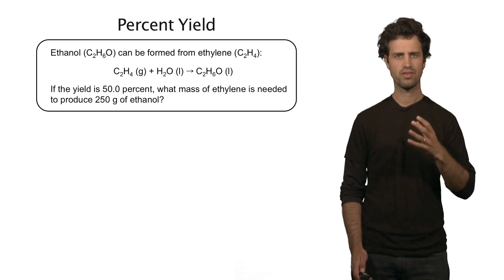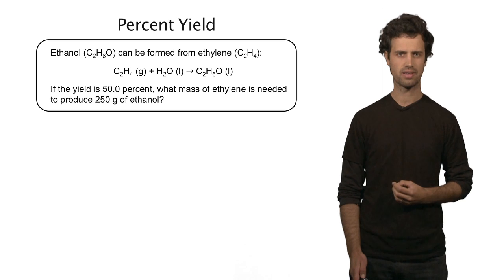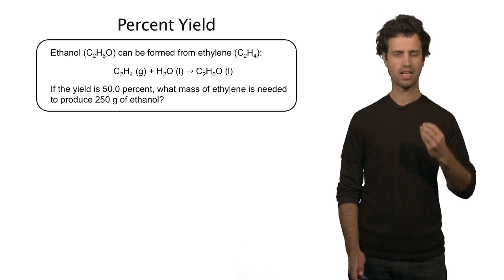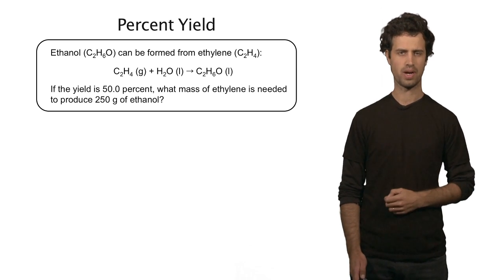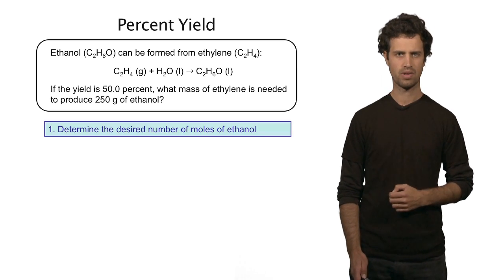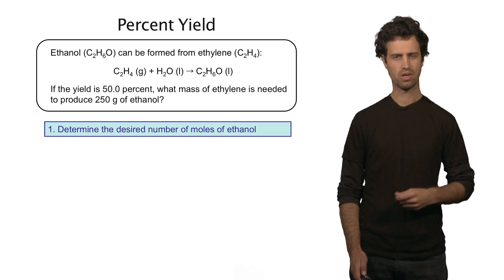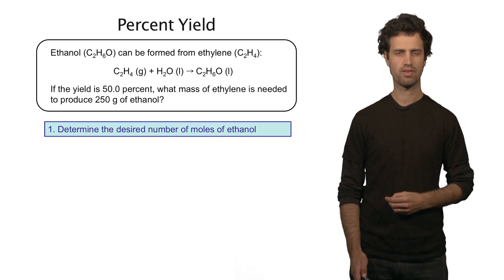Now let's assume that the reaction yield in this reaction is 50%, and that I desire at least 250 grams of ethanol. How many grams of ethylene do I need? Well, first I like to determine how many moles of ethanol are there in 250 grams.